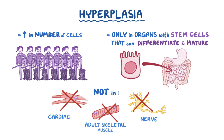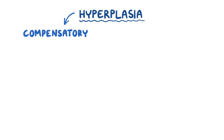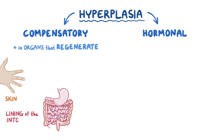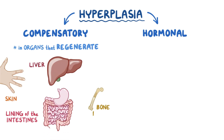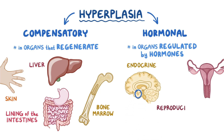That's why those tissues typically only undergo hypertrophy when they face increased stress. There's compensatory hyperplasia and hormonal hyperplasia. Compensatory hyperplasia happens in organs that regenerate, like the skin, the lining of the intestines, the liver, and bone marrow. Hormonal hyperplasia happens in organs that are regulated by hormones, like organs in the endocrine and reproductive system.